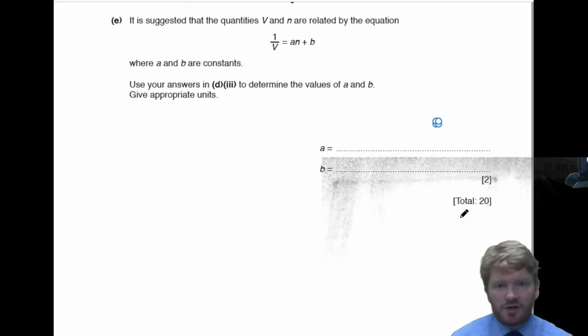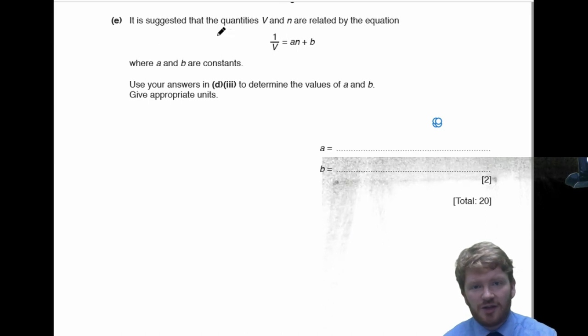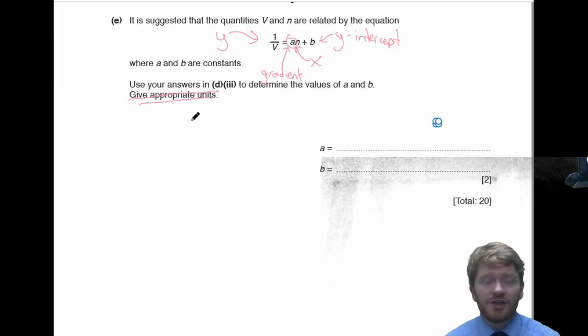Okay, so now we're just asked the classic question that they will always do here. It says that the quantities V and N are related by this equation. So, you'll notice that 1 over V is what you plotted on your y-axis. N is what you plotted on your x-axis. So, that means that this number A must be your gradient, and this number B must be your y-intercept. So, you're asked if A and B are constants, give your answer to 3 sig figs, determine the value of A and B. And notice here it does say give appropriate units.